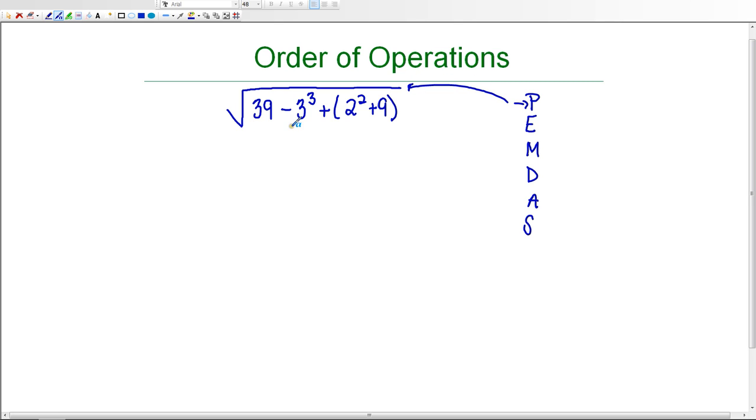This radical symbol is also a grouping symbol. And that means that anything underneath of this radical needs to be evaluated first. If I had, let's just say, plus 3 squared on this problem, that would mean that we would have to evaluate everything underneath the radical first, and then evaluate the 3 squared. I'm going to take that away for now, but right now we're just going to focus on underneath of the radical.